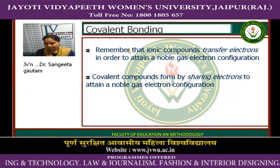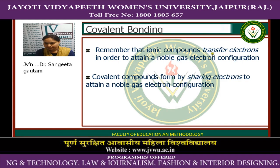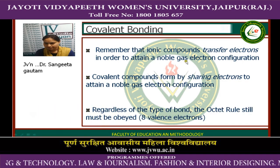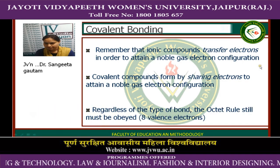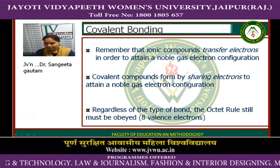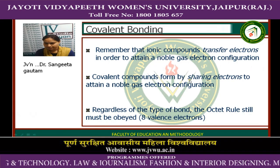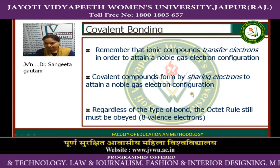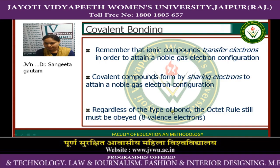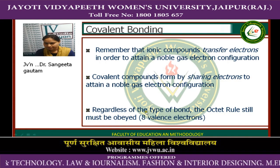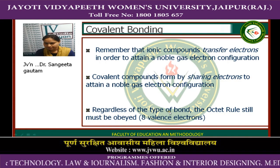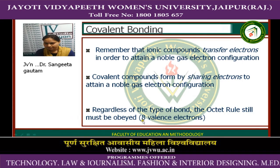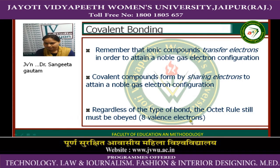Remember that ionic compounds transfer electrons in order to attain a noble gas electron configuration, whereas covalent compounds are formed by sharing electrons to attain a noble gas electron configuration. Regardless of the type of bond, the octet rule must still be obeyed: 8 valence electrons.